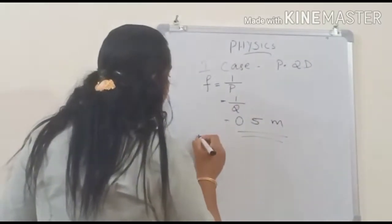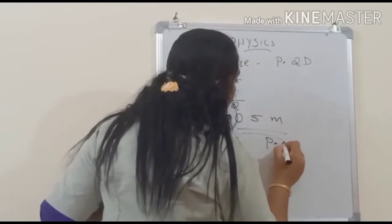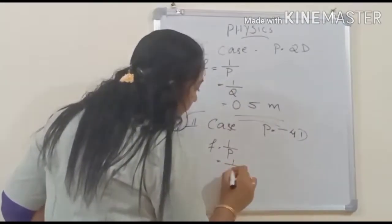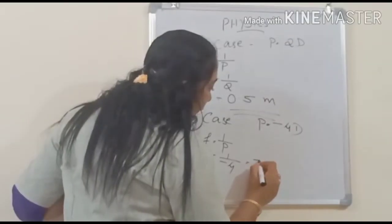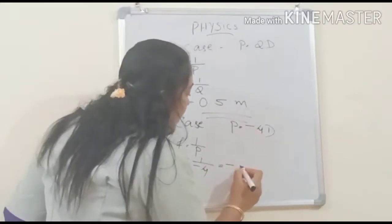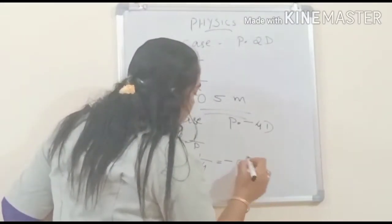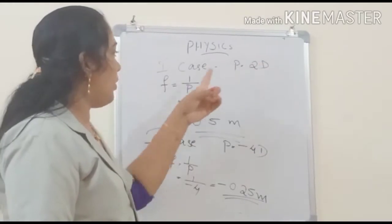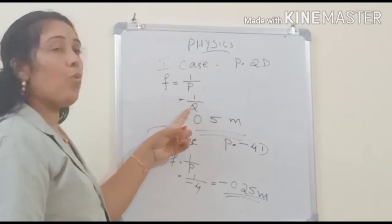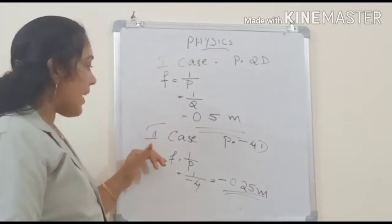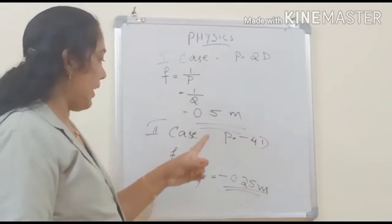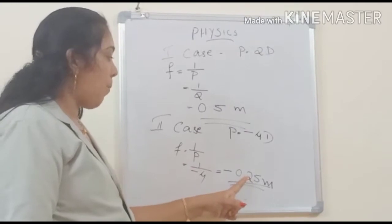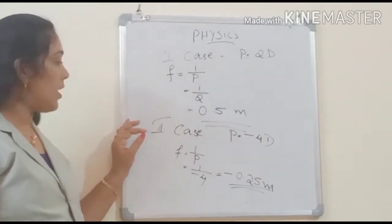In the second case, P equals minus 4D. So F equals 1 by P, that is 1 by minus 4, which equals minus 0.25 meter. To summarize: first case, power is 2D, so F equals 1 by 2 equals 0.5 meter. Second case, P equals minus 4D, so F equals 1 by minus 4 equals minus 0.25 meter.